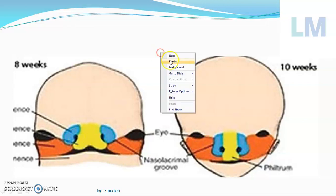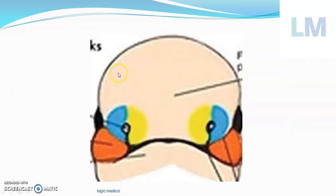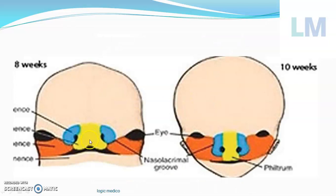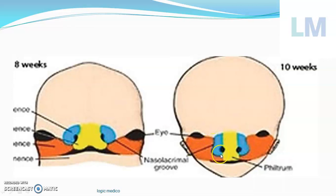This is the most important change at the 8th week of intrauterine life. The maxillary process grows upwards and medially. First it fuses with the lateral nasal process to complete the formation of the cheek, then grows further medially to touch the medial nasal process. Simultaneously, the two medial nasal processes fuse with one another, giving rise to the philtrum of the upper lip — the depressed area in the upper lip. When the maxillary process fuses with the lateral nasal process, a part of the ectoderm gets embedded to give rise to the nasolacrimal duct, which connects the lacrimal sac to the nose.